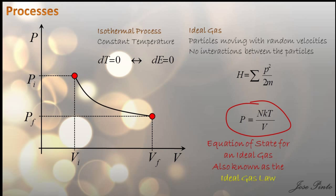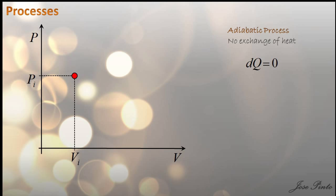It turns out that constant temperature implies no change of internal energy — you will see that in the next video. Now let's look at the adiabatic process. This is one where there is no exchange of heat between the environment and the system. Adiabatic processes can occur if the container of the system has thermally insulated walls. You will also see in the next video that the equation to follow is this one.